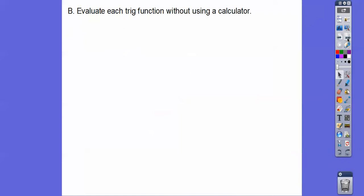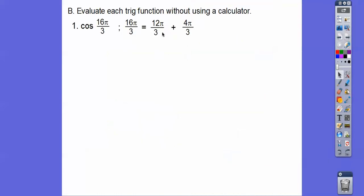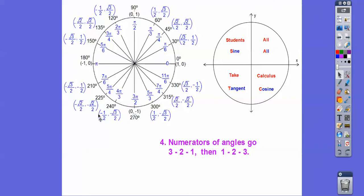Now let's evaluate the trig functions without using a calculator. The cosine of 16π over 3: recognize that 16π/3 equals 12π/3 plus 4π/3, which is 4π plus 4π/3. Since 4π is two complete circles, the cosine of 16π/3 is the same as the cosine of 4π/3. With denominator 3, that's one more than twice 3 minus 1, placing us in quadrant 3. The cosine there is negative one-half.